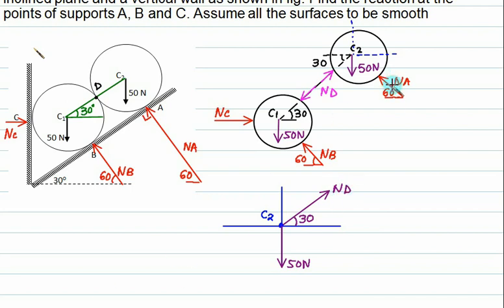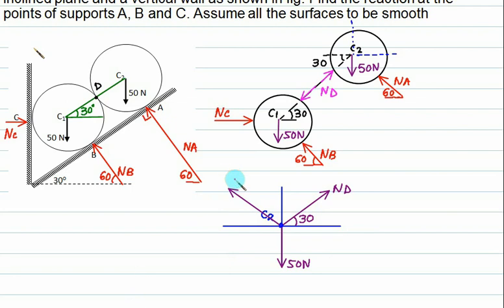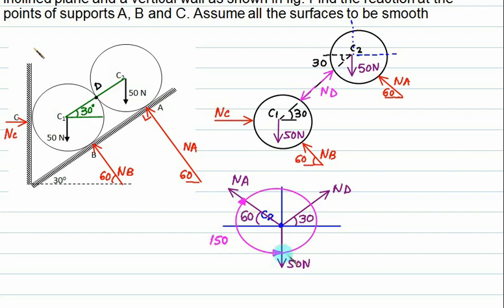We have one more force Na, which acts in the fourth quadrant. We can shift this force along its line of action, so Na acts outward making an angle of 60° with the horizontal. We now have three forces, so we can apply Lami's theorem. The angle between the first two forces is 60° + 90° = 150°, the next angle is 120°, and the third angle is 360° − 150° − 120° = 90°.